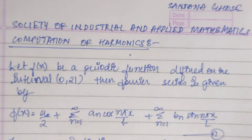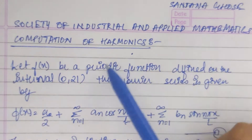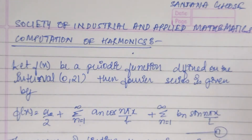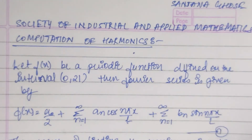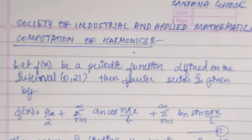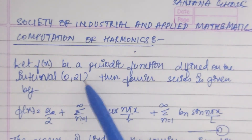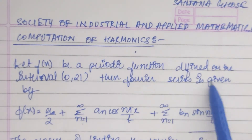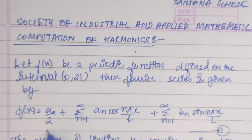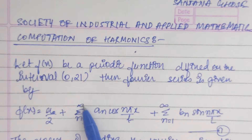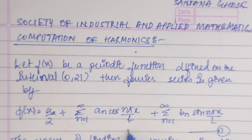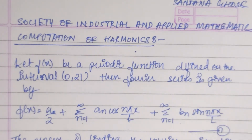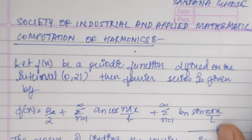Today we're going to be taking a very important topic: the computation of harmonics, also known as harmonic analysis. Questions from here are very important, so do practice them in plenty. Let the function f(x) be a periodic function defined on the interval 0 to 2l. The Fourier series is given by f(x) = a0/2 + summation of an·cos(nπx/l) + summation of bn·sin(nπx/l).